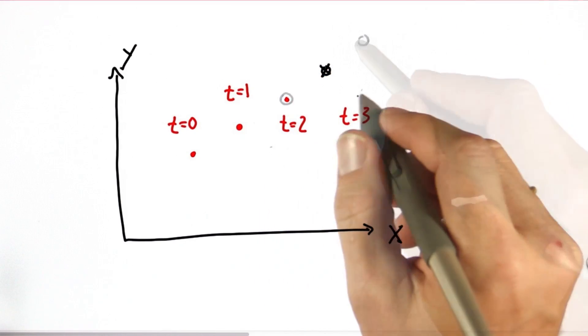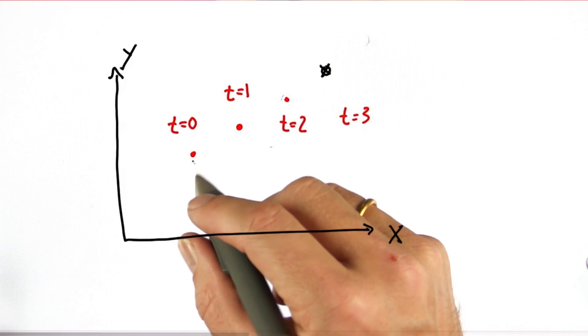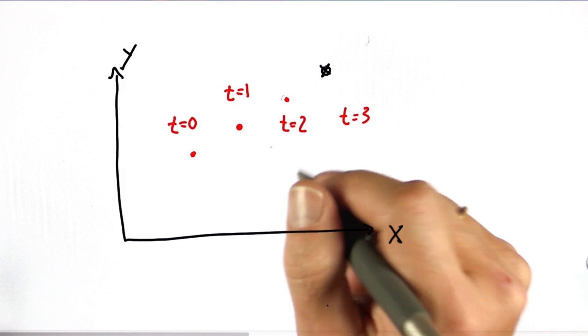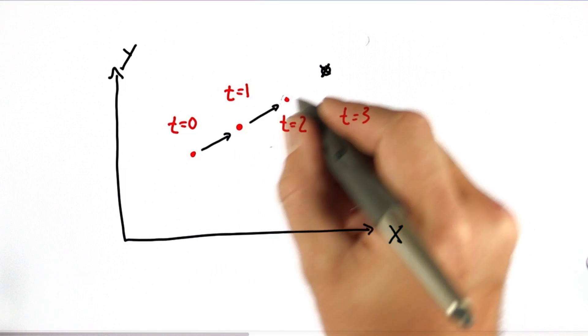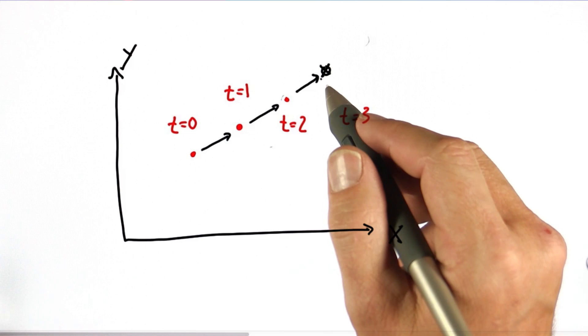What the Kalman filter does for you if you do estimation in higher dimensional spaces is to not just go into X and Y spaces, but allows you to implicitly figure out what the velocity of your object is, and then use this velocity estimate to make a really good prediction about the future.